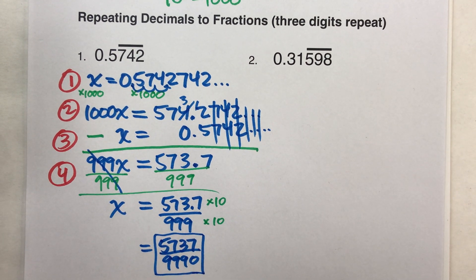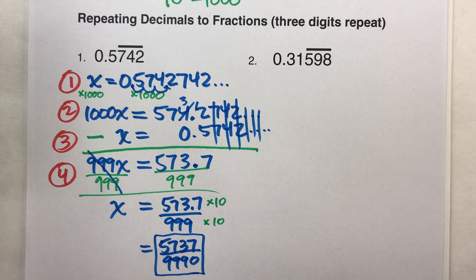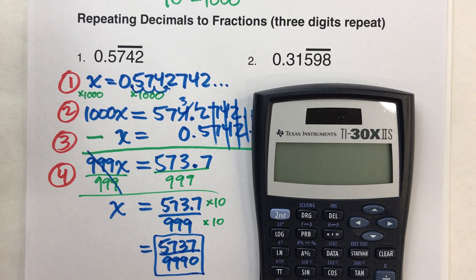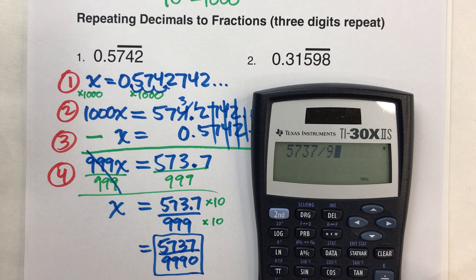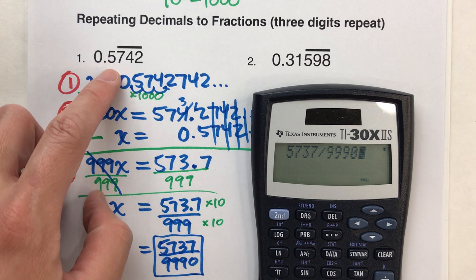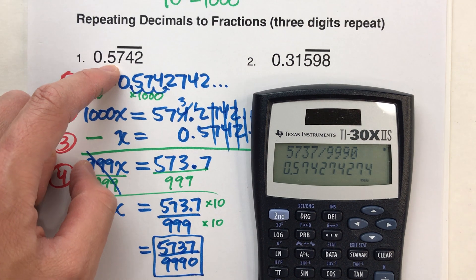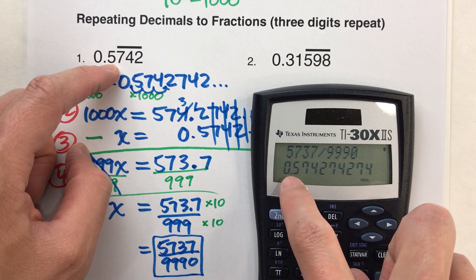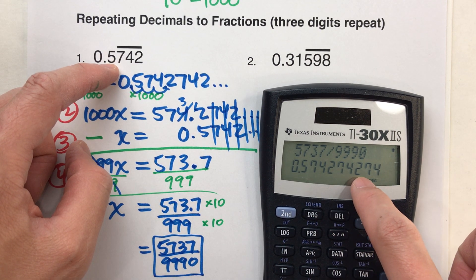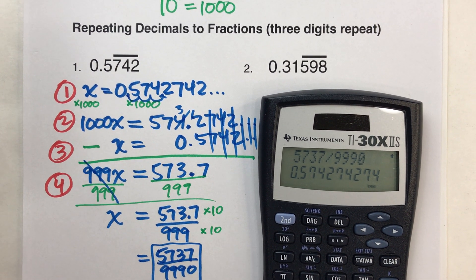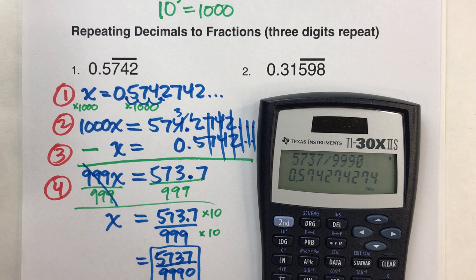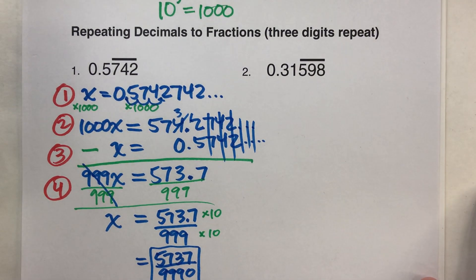5,737 over 9,990, crazy fraction I know, but let's do a double check. 5,737 divided by 9,990, it should get me .5742, 742, 742, 742, and look, 0.5742, 742, 742, 742. Alright, so we're looking pretty good here. We'll do one more example so you can see it, and this one's a little bit harder than the first one.